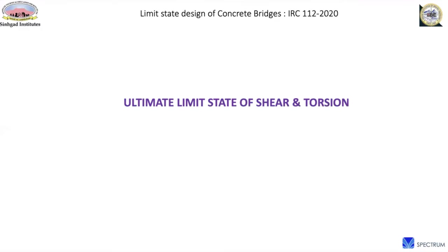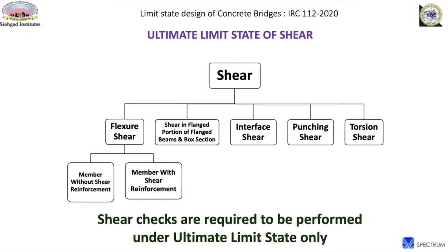Let's start Part 2 with the ultimate limit state for shear and torsion. There are various different types of shear forces we encounter in design. The main classification is flexural shear, which appears due to bending in the member. Shear and moments are complementary to each other — whenever there is a shear, there is an associated bending moment, and most of the time vice versa.